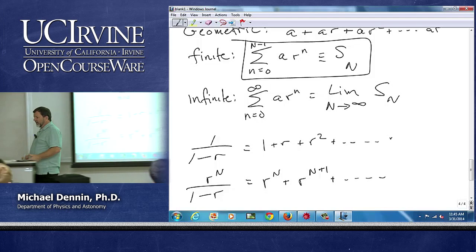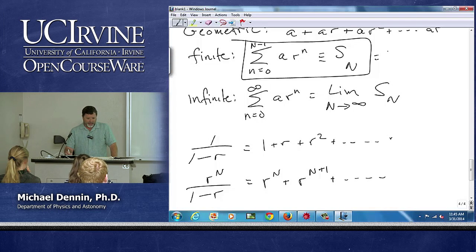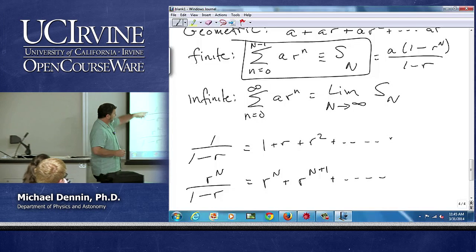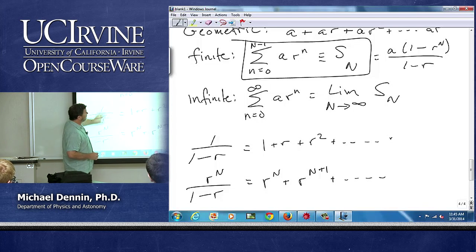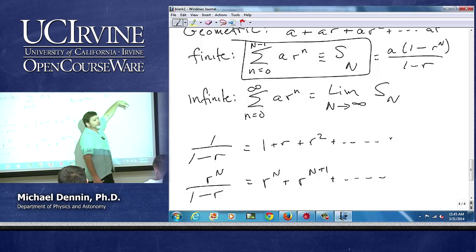So I have a nice way to write this series. It's a times 1 minus r to the capital N over 1 minus r, because they have the same denominator so I can subtract them and I get what I want.